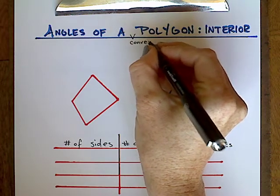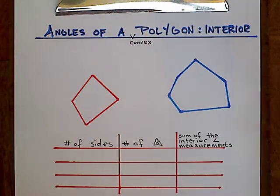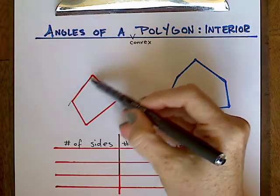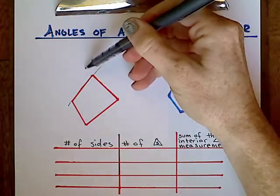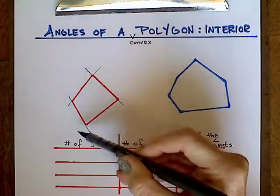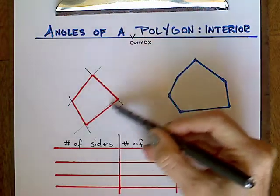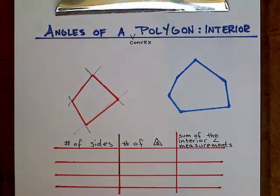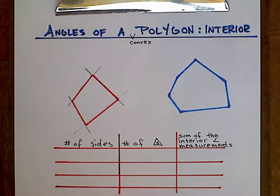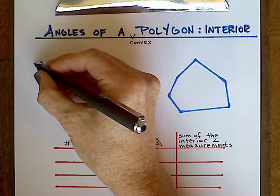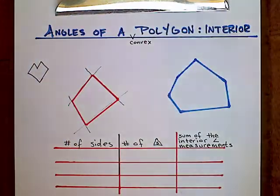You can think of the terms convex and concave just like you learned them in your science classes. Convex means going outward, and concave means going inward. To test that a polygon is convex, you extend each one of the sides. If any of those line segments go into the interior of the polygon, then it's not going to be convex.